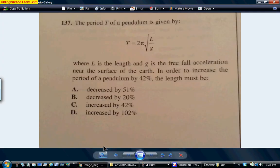So the problem is the period T of a pendulum is given by the following formula where L is the length and G is the free fall acceleration near the surface of the earth. They say near the surface of the earth because what that means is that essentially G is constant. The acceleration can change if we're at a great distance above the earth, but essentially on the surface it's constant.